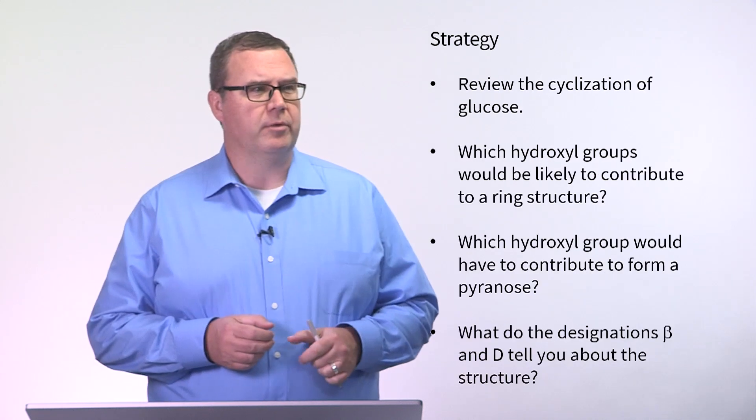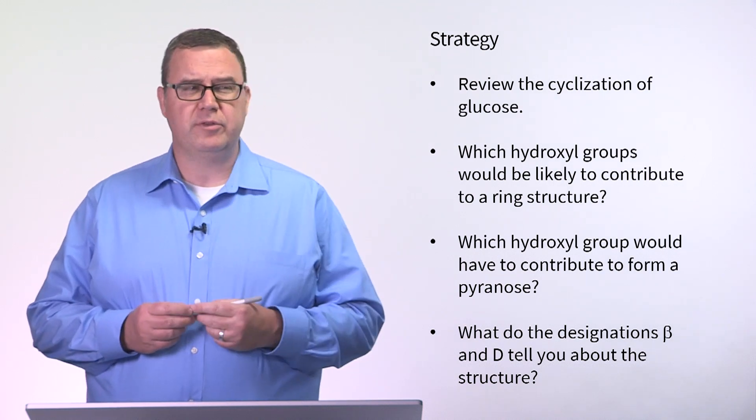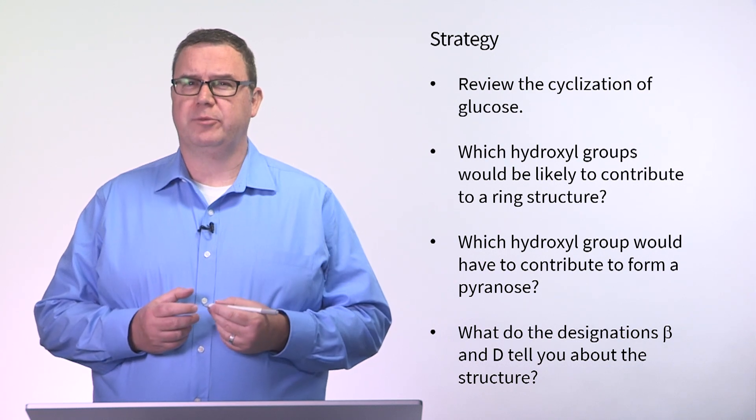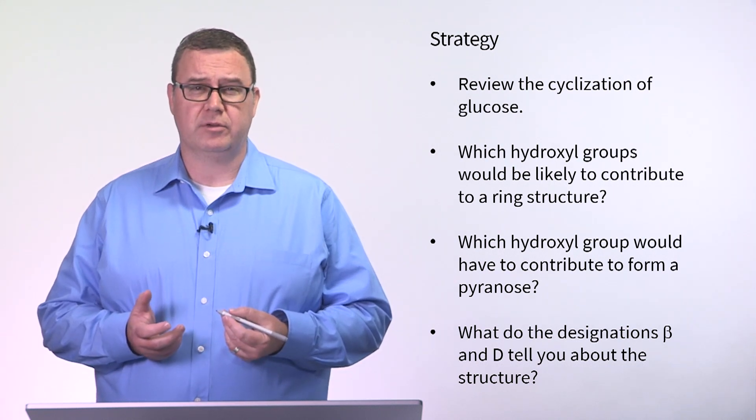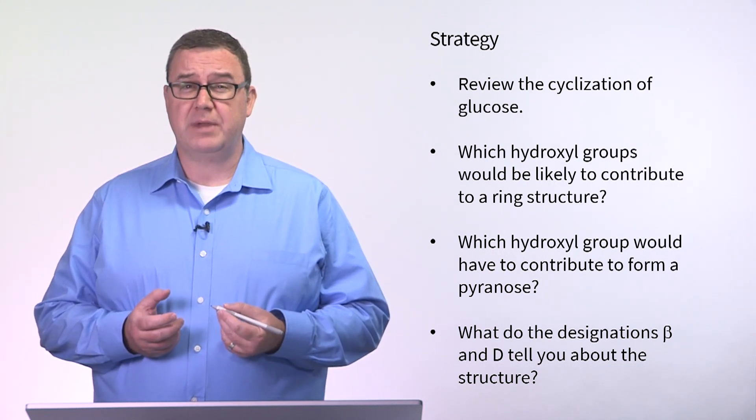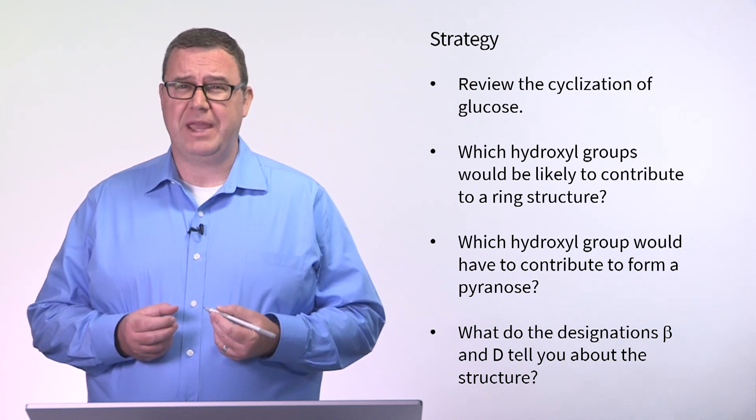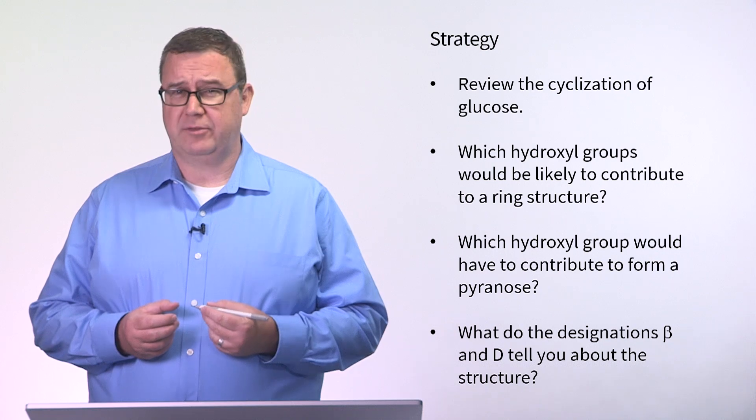The strategy we're going to employ here is to review the cyclization of glucose discussed in this section. What hydroxyl groups would be likely to contribute to a ring structure? Which hydroxyl groups would have to contribute to form a pyranose? And what do the designations beta and D tell you about this structure?